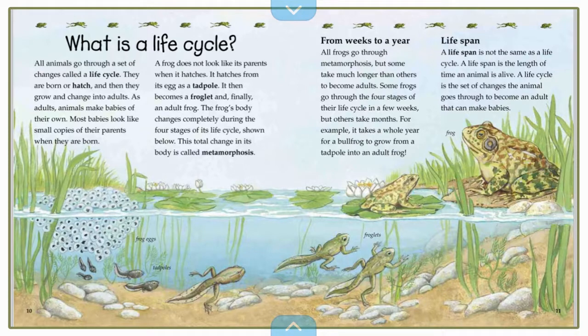Lifespan. A lifespan is not the same as a life cycle. A lifespan is the length of time an animal is alive. A life cycle is the set of changes the animal goes through to become an adult that can make babies. We saw a lot of this vocabulary in the preview that we just did.